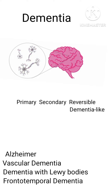Primary types of dementia include Alzheimer's, which is the most common type of dementia caused by buildup of specific proteins causing tangles and plaques that disrupt communication between nerve cells in the brain.